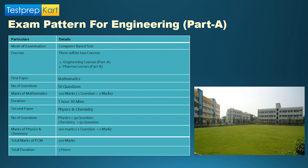The PCM group is for admission into BTech or B.Arch courses. The first paper is Mathematics, which has a total of 50 questions. Each question carries two marks, so the total marks for Mathematics is 100. The time allotted for Mathematics is one and a half hours.